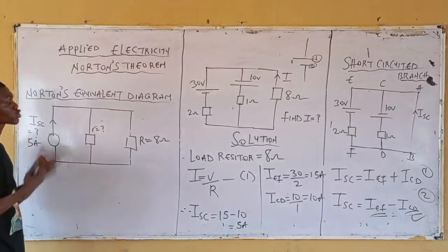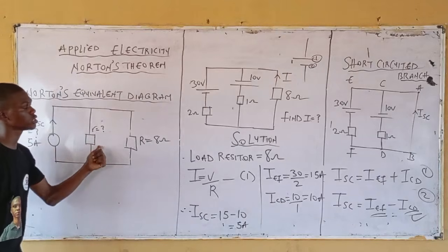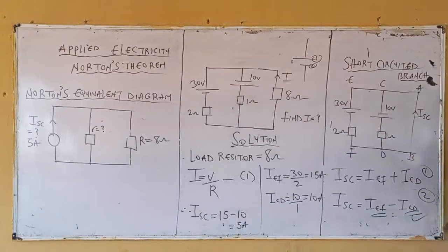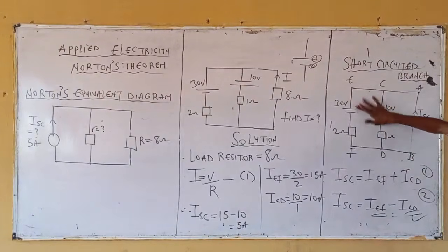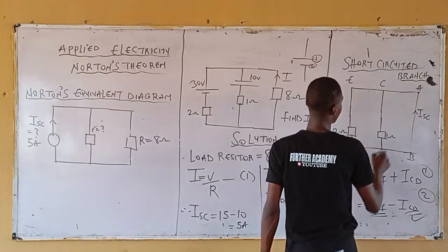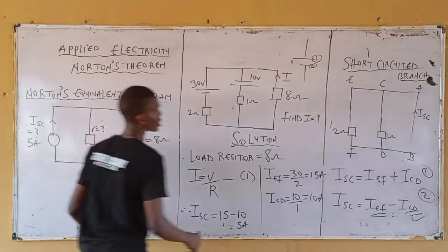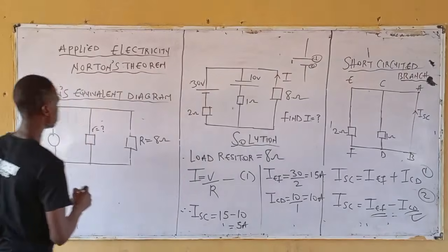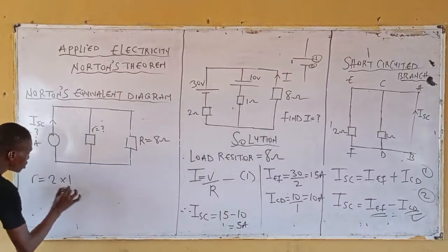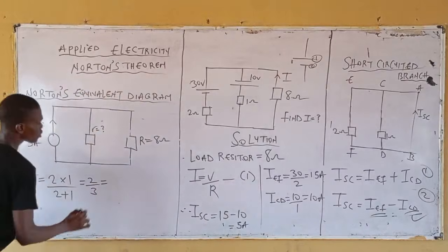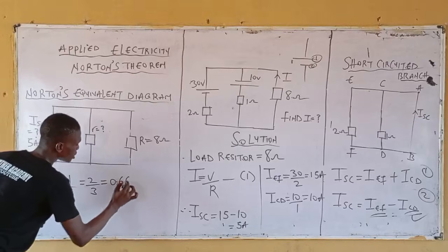Next, you have to get the equivalent resistor. From the diagram, remove the source voltage — they are joined together. So remove the source voltage. The equivalent resistor equals 2 times 1 over 2 plus 1, which equals 0.667 ohm.